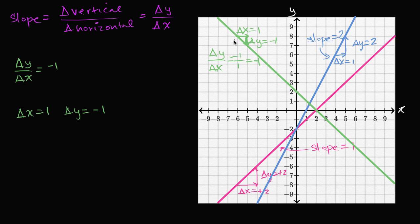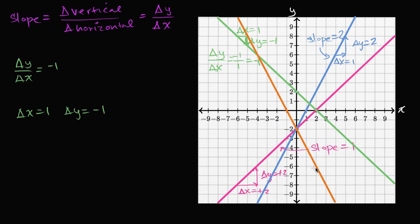If you had a slope of negative two, it would decrease even faster. A line with a slope of negative two: as x increases by one, y would decrease by two. It would look like that. Notice, as our x increases by a certain amount, our y decreases by twice as much. So this line has a slope of negative two.